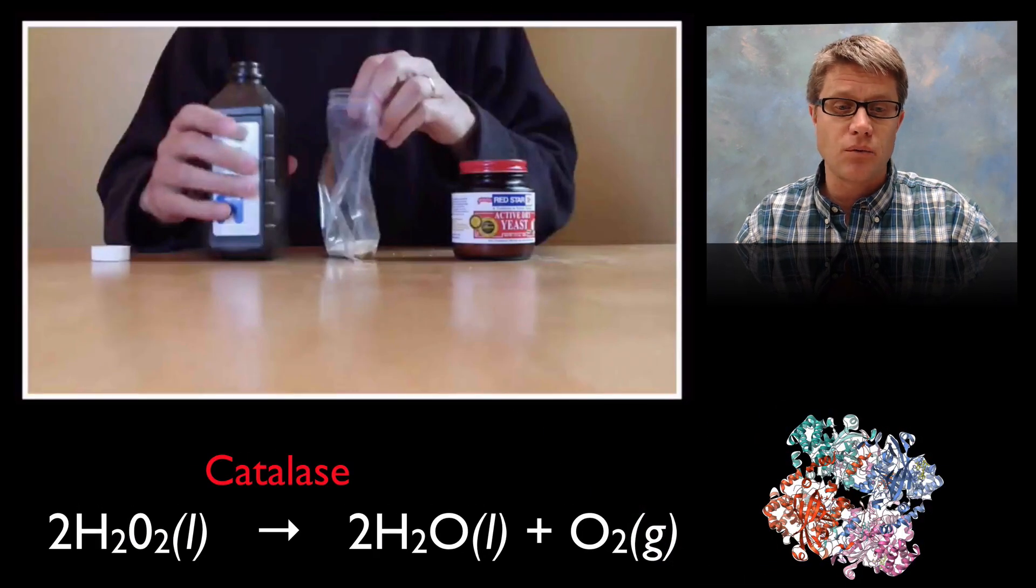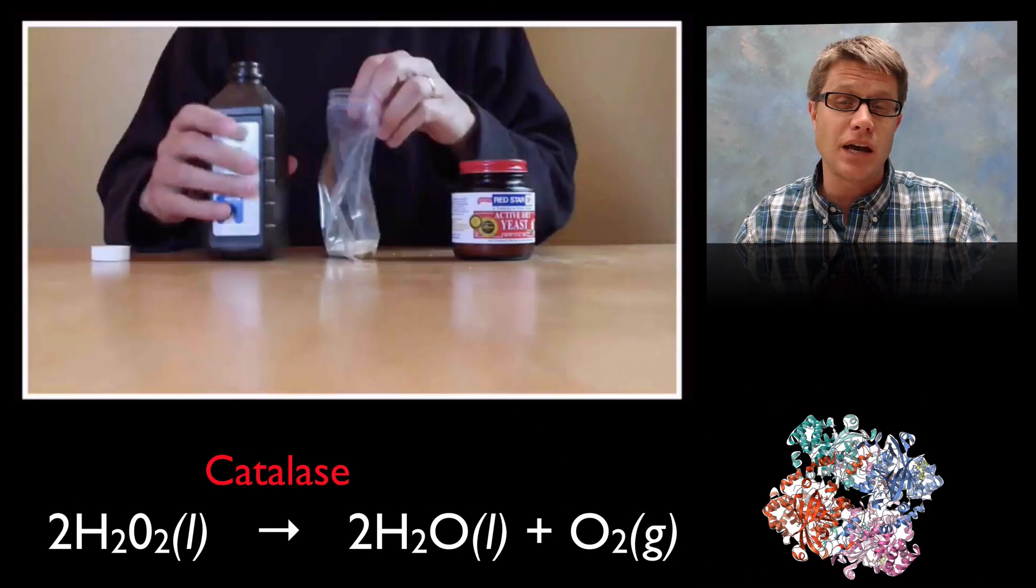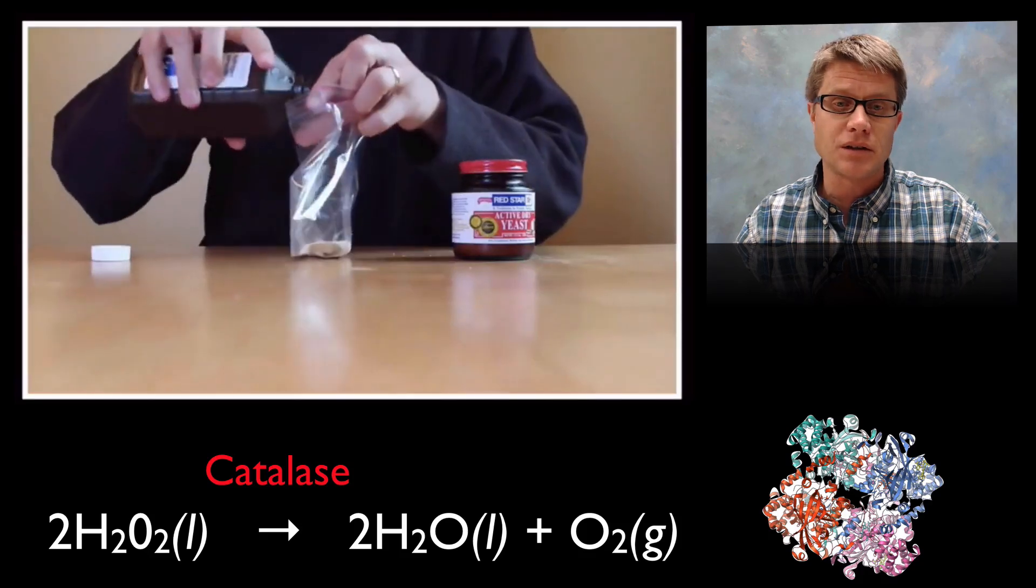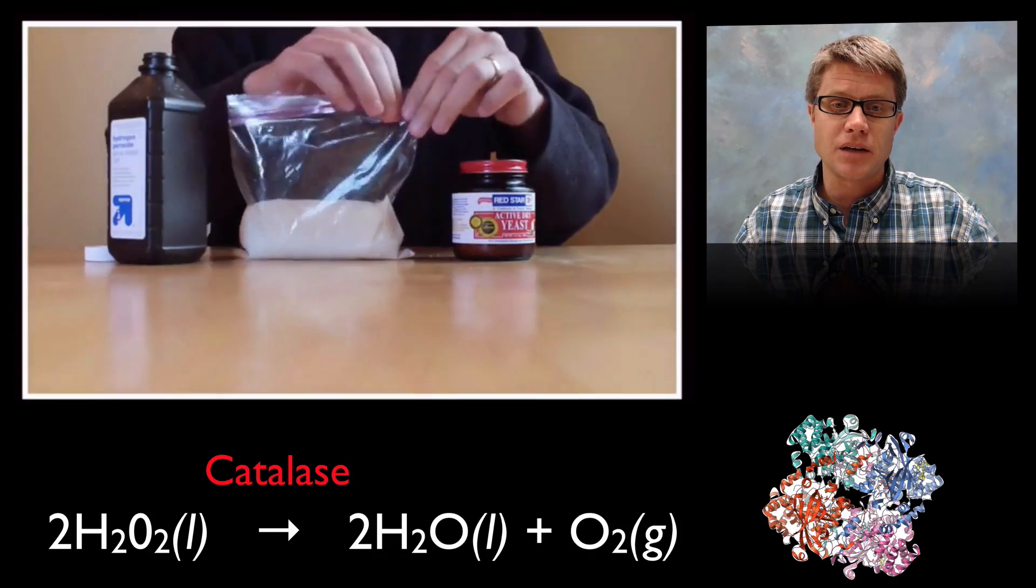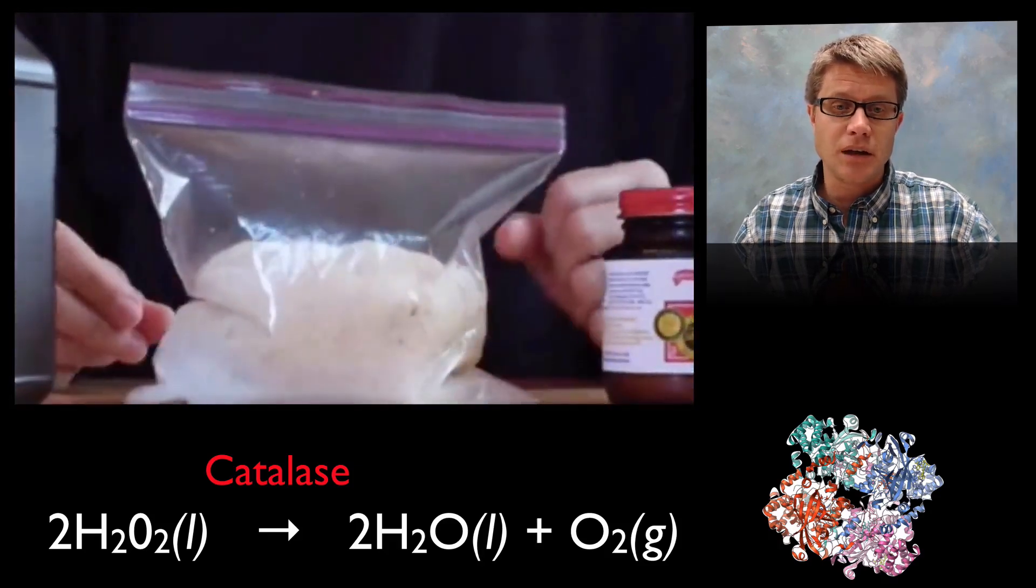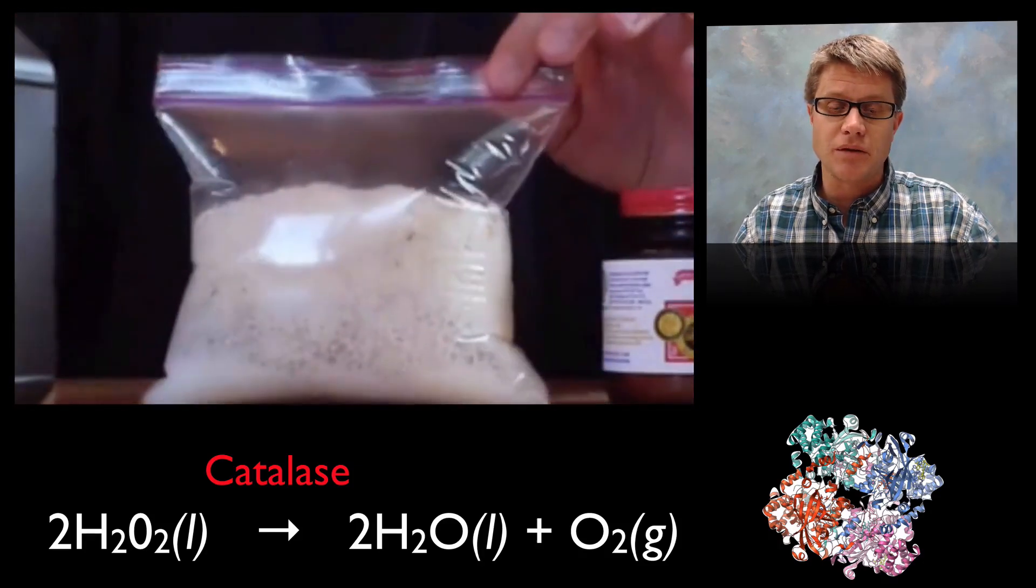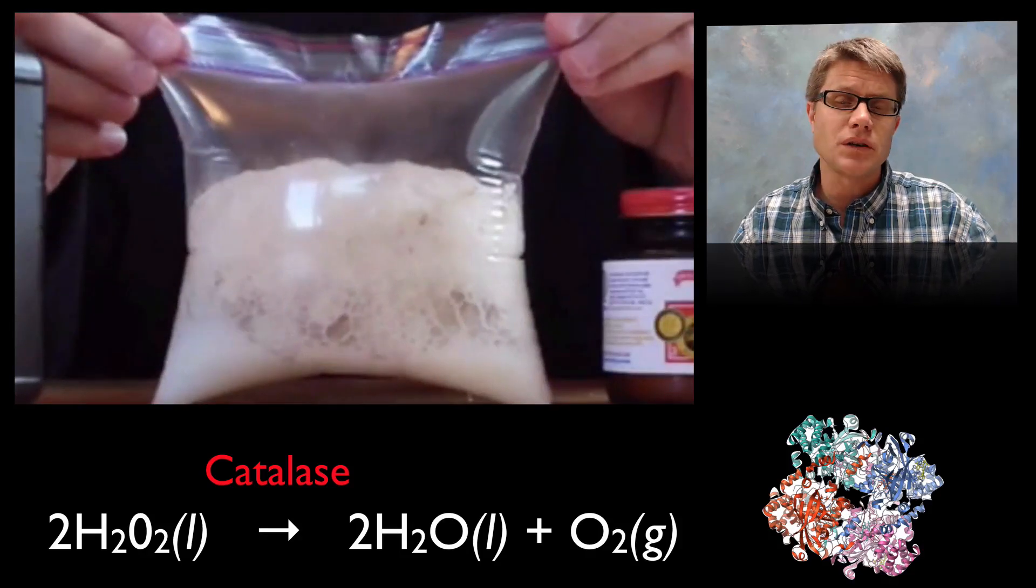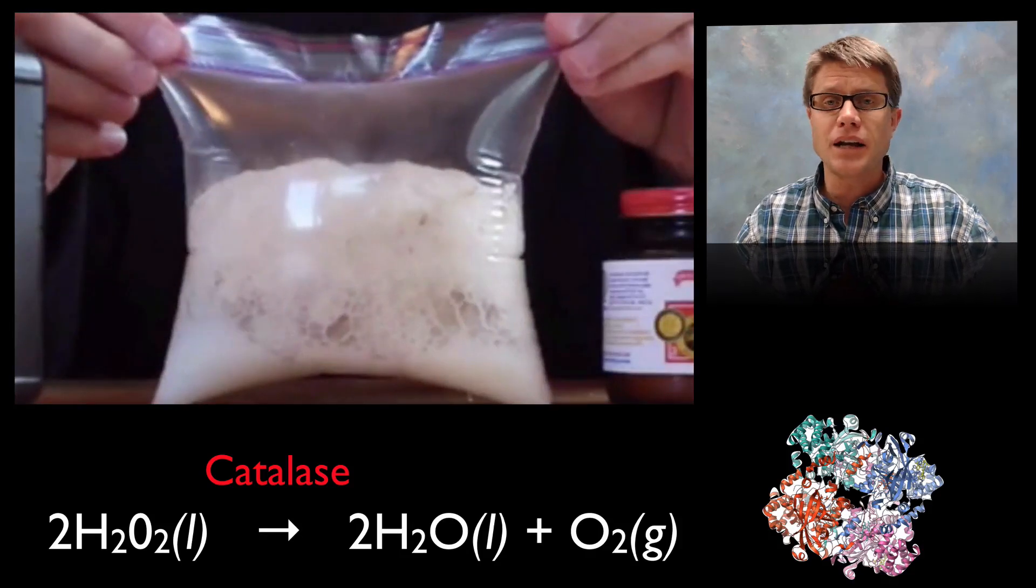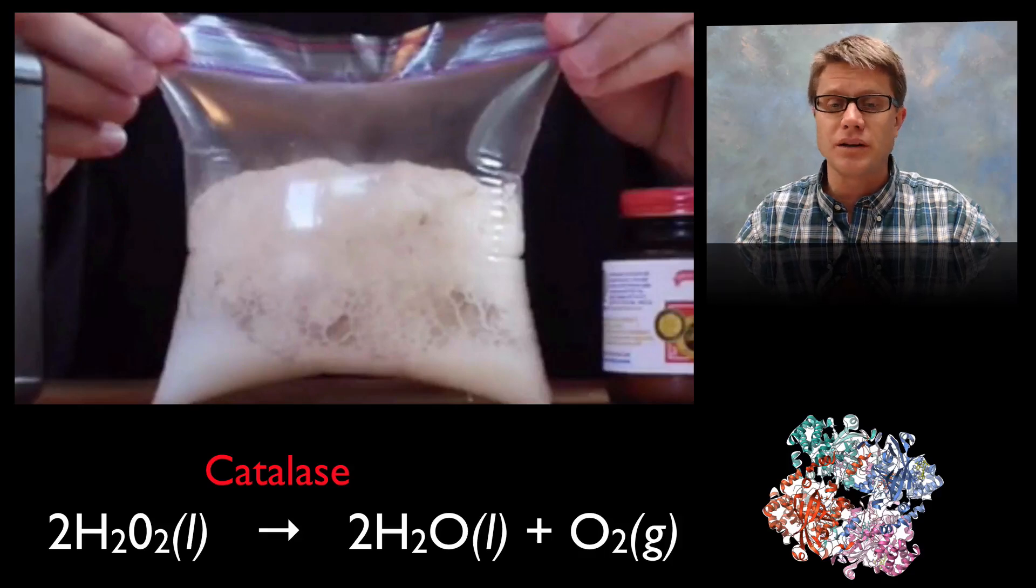So let me show you a catalyst at work. This is catalase, which is an enzyme found in almost all living cells. So what I'm doing is adding a little bit of hydrogen peroxide to a bag that's got yeast in it. And you can try this at home. Shake it up a little bit and you can see I'm producing a huge amount of oxygen gas right there. And so hydrogen peroxide would do this on its own, but if we add an enzyme to it we can speed that whole process along.